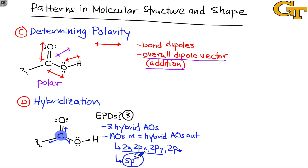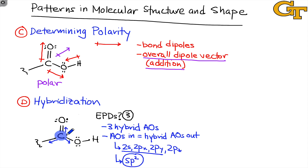In the last part of the experiment, you'll work out the hybridization of the central atom in each of the substructures drawn in part A. This is an important interpreted result of the full Lewis structure. Hybridization gives us insight into the nature of electrons around the central atom — their energies, their reactivity, and their locations in space.